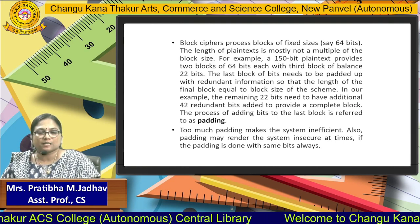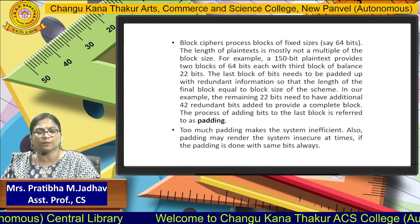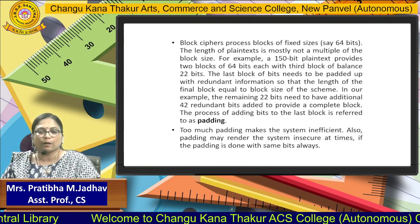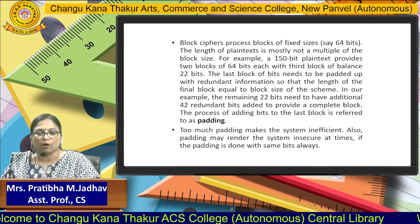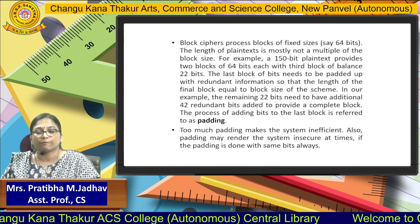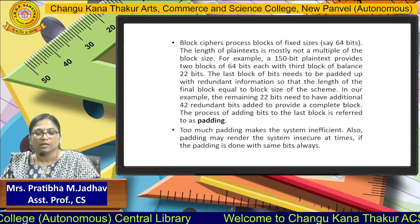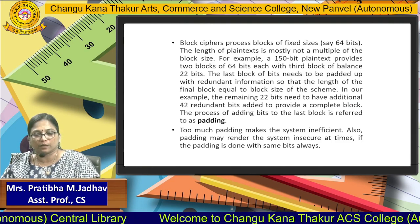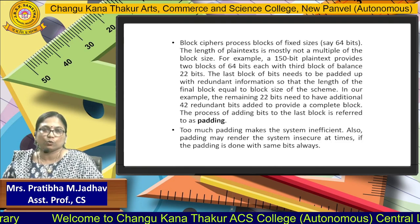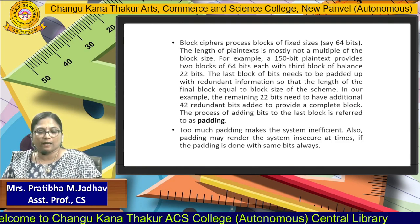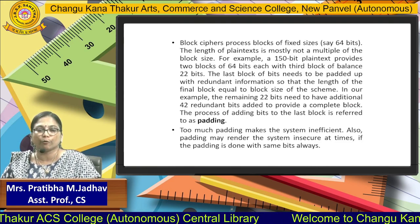Block cipher process has one more important concept, which is called padding. What is meant by padding? When we are creating a block, it should have a size that is a multiple of 8 bits. But sometimes if that block is not enough, then we have to carry some bits from the S-box. Whatever bits we are carrying is known as padding. Too much padding makes the system inefficient, so you have to remember that padding must be below 5 bits.